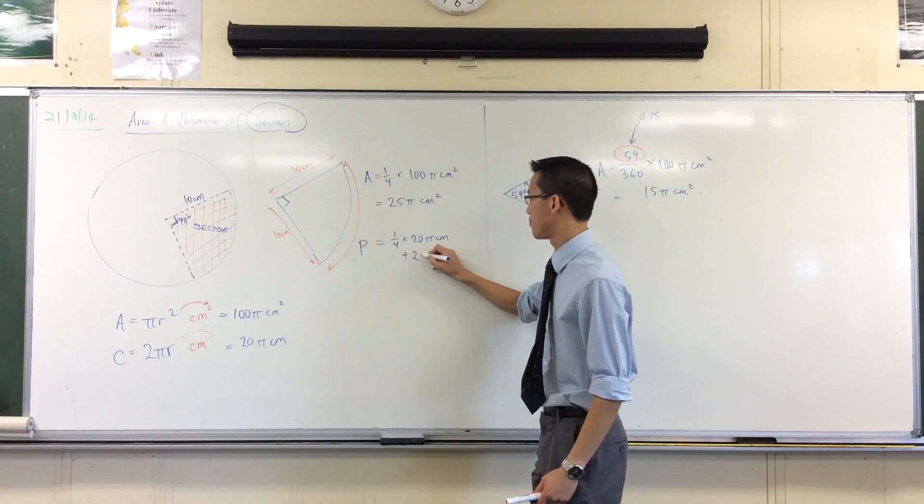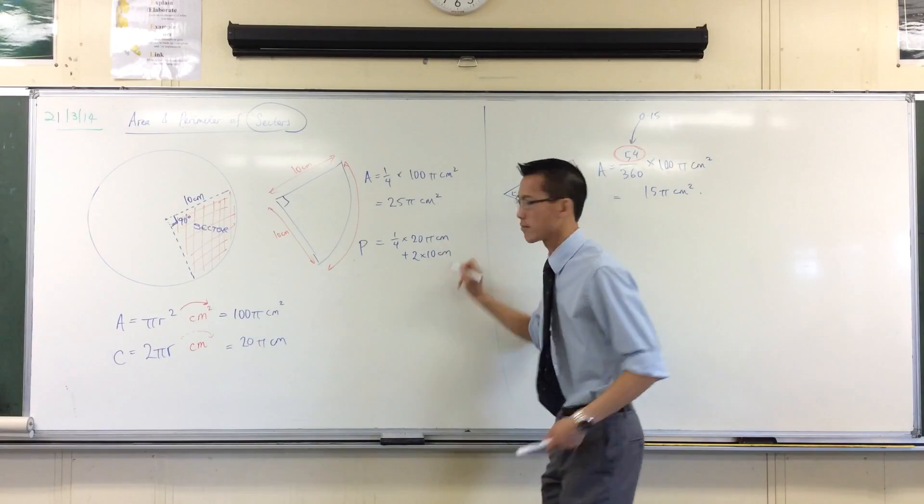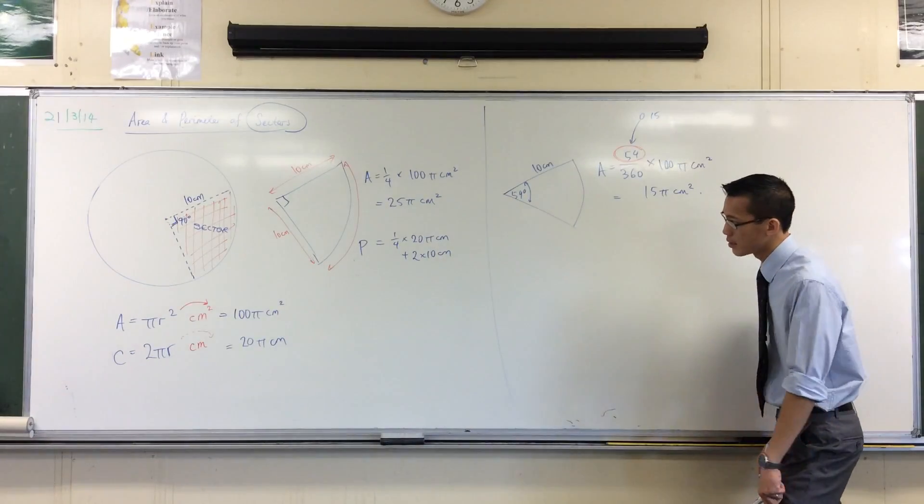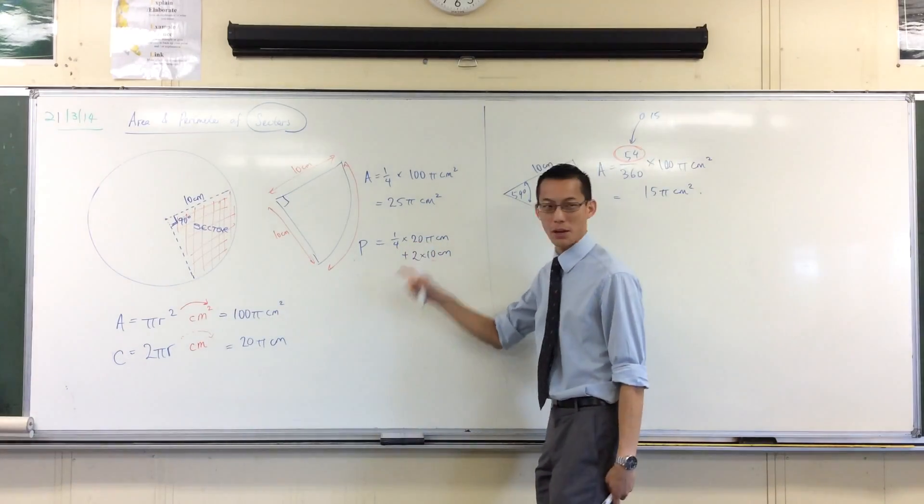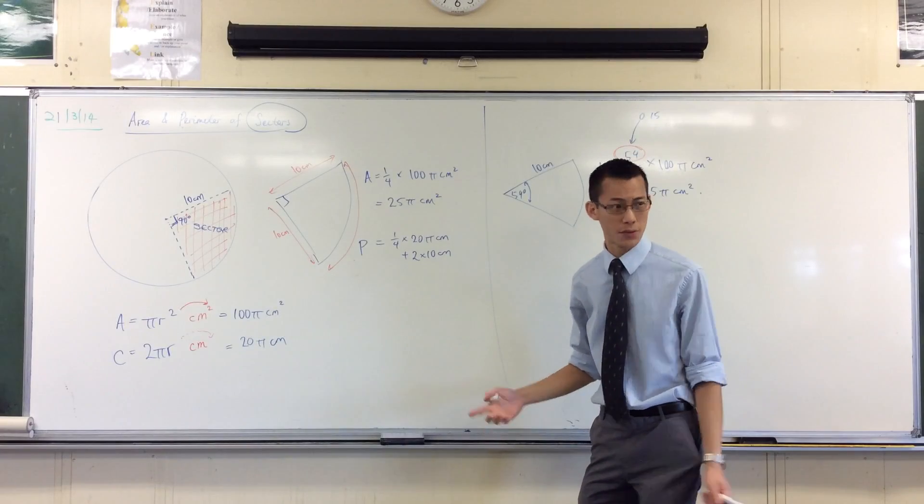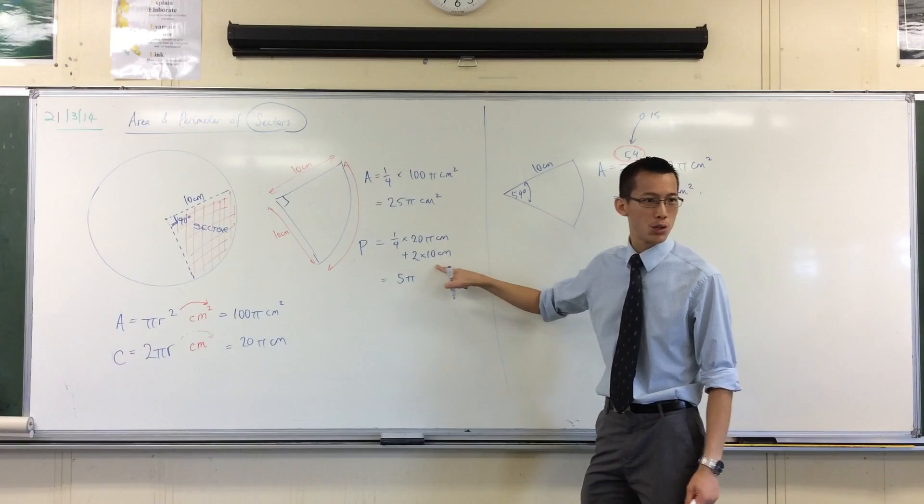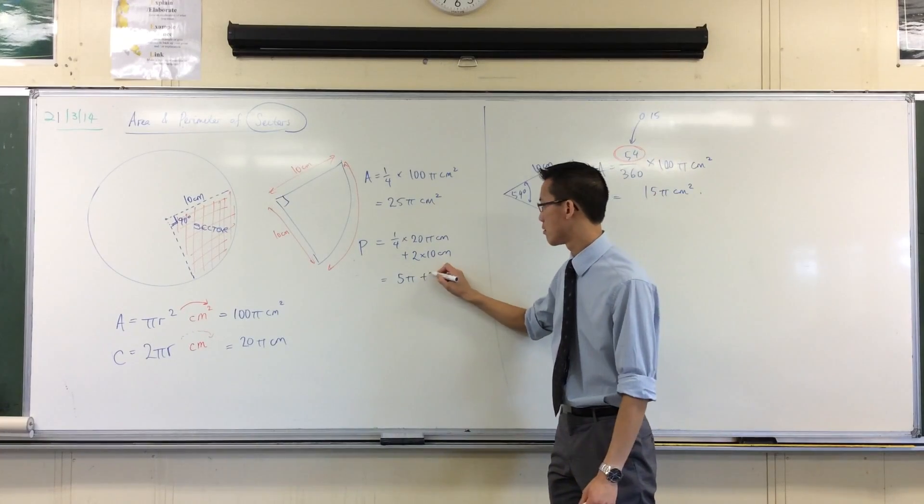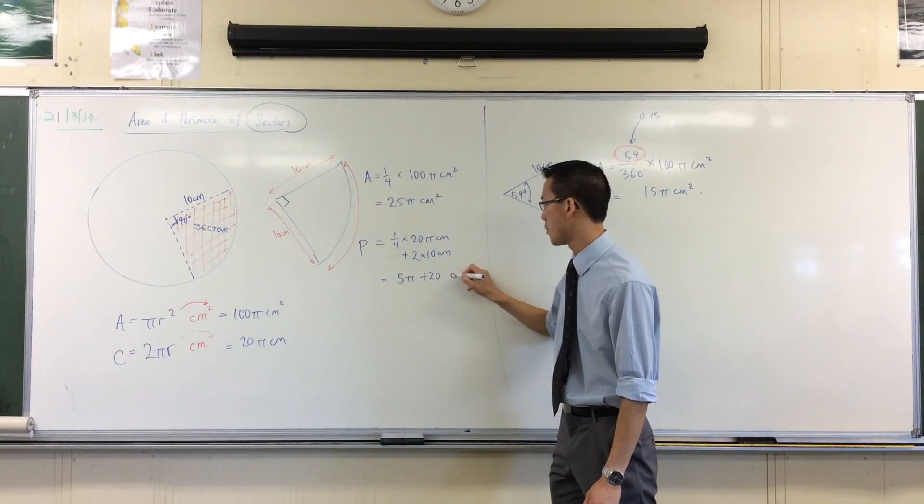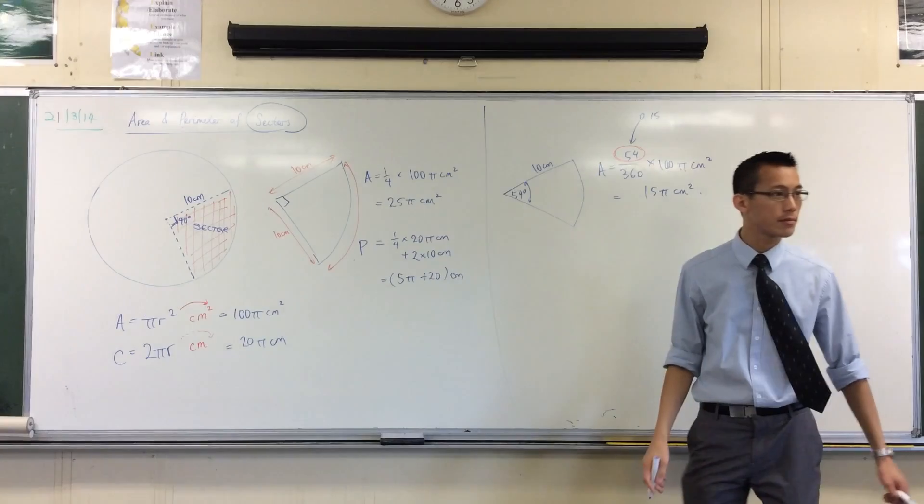So you got 10 centimeters here, 10 centimeters here. So if I want the whole perimeter, what else do I need to add on to this? Two lots of 10. What's a quarter of 20π? It's 5π. And then you've got 2 times 10, which is 20. And that's how many centimeters you've got.